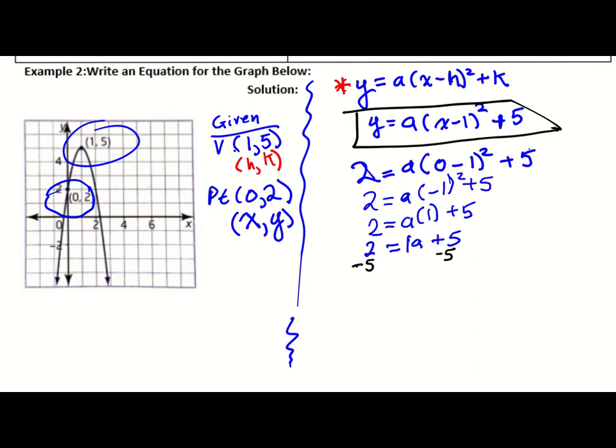Once we subtract 5 from both sides, we end up with this. 2 minus 5 gives us negative 3, which is equal to 1a.